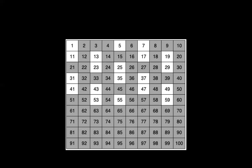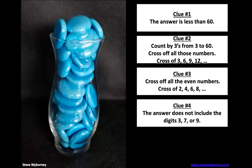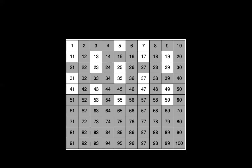All right, let's take a look at the fourth clue. The answer does not include the digits 3, 7, or 9. All right, let's take a look at our numbers. So when it says it does not include the digits 3, 7, or 9, that means those digits cannot appear in either the ones column or the tens column. So let's look at the ones column first. We want to cross off all these numbers that end in a 3, 7, or 9, because there's a 3, 7, or 9 in the ones column. Now we can also cross off all the 30s because there's a 3 in the tens column.